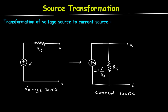The next question is: what will be the value of this current source? We can calculate it using Ohm's law: I = V / RS, that is, current equals voltage divided by resistance. We take the voltage value from the voltage source and the resistance value from RS, which remains the same. This is how we convert a voltage source to a current source.